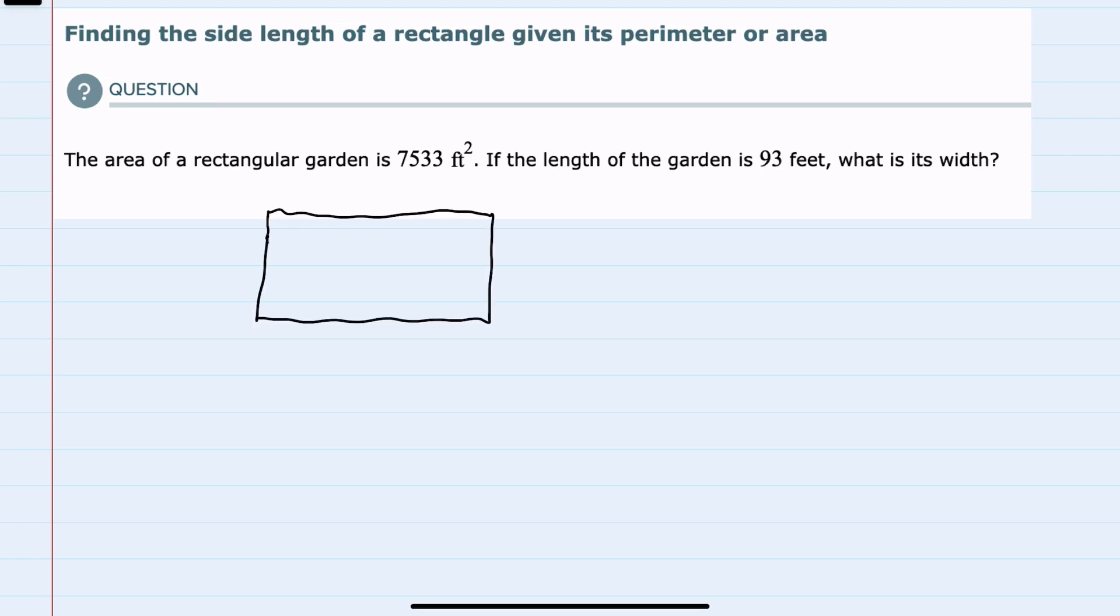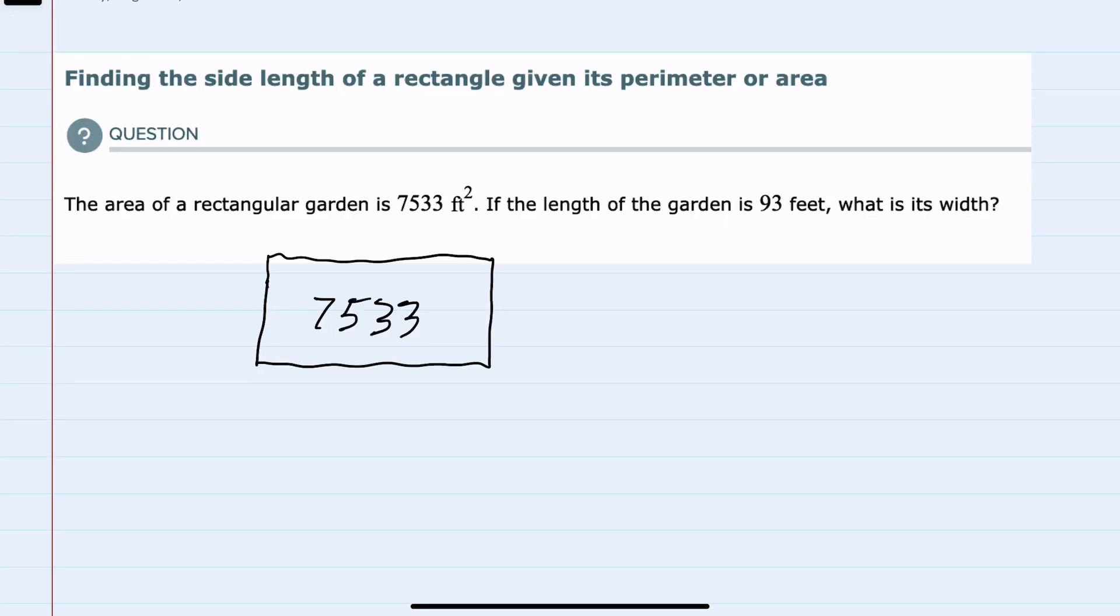And in this example, we're told the area of our rectangular garden is 7,533 square feet.